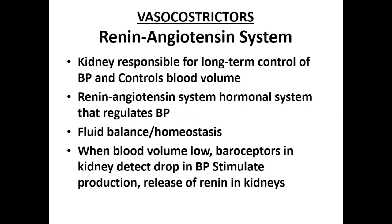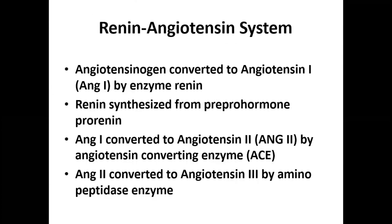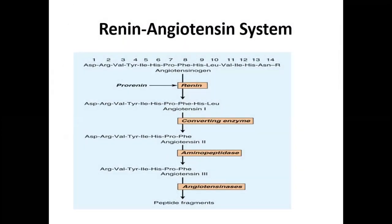The first vasoconstrictor is the renin-angiotensin system. The kidney is responsible for long-term control of blood pressure and also controls blood volume. The renin-angiotensin system is a hormonal system that regulates blood pressure, fluid balance, and homeostasis. Whenever there is a reduction in blood volume, baroreceptors in the kidney detect the drop in blood pressure and stimulate the production and release of renin. Angiotensinogen is converted to angiotensin 1 by the enzyme renin, which is synthesized from the pre-prohormone pro-renin.